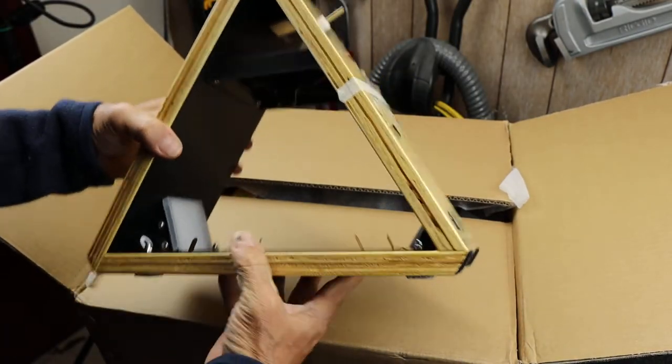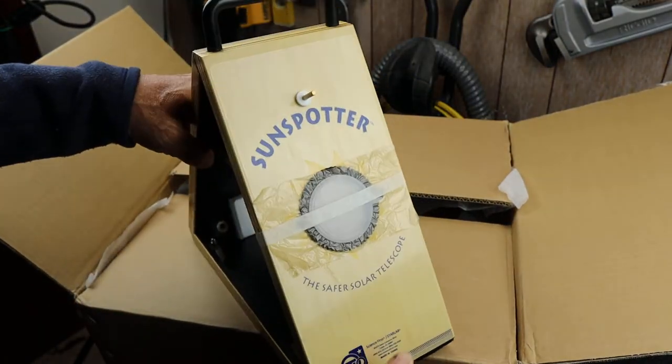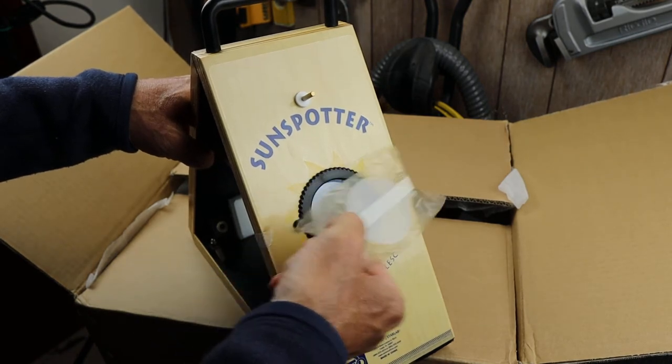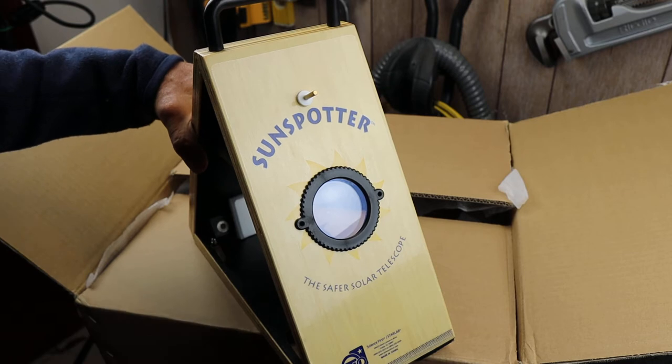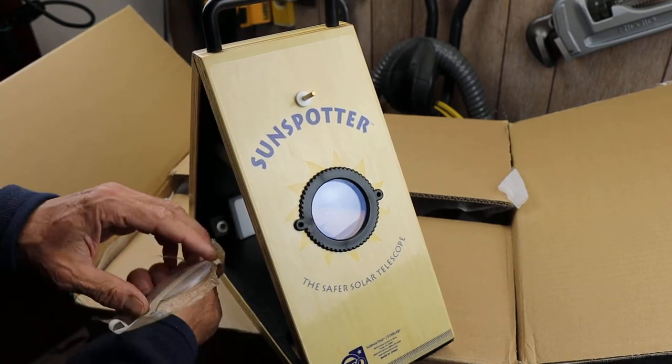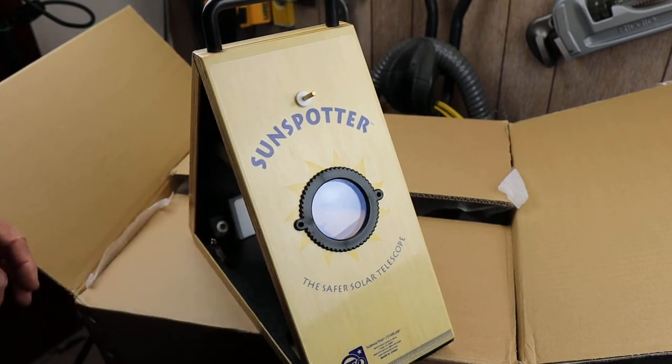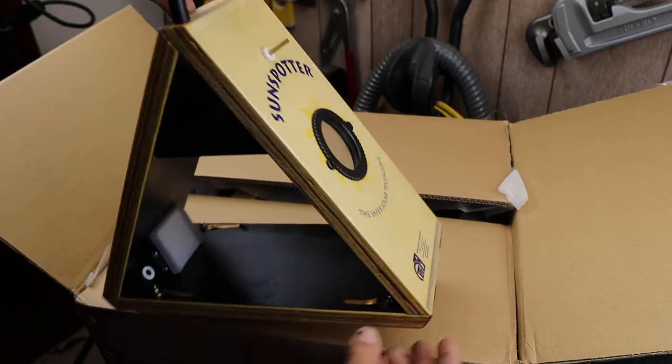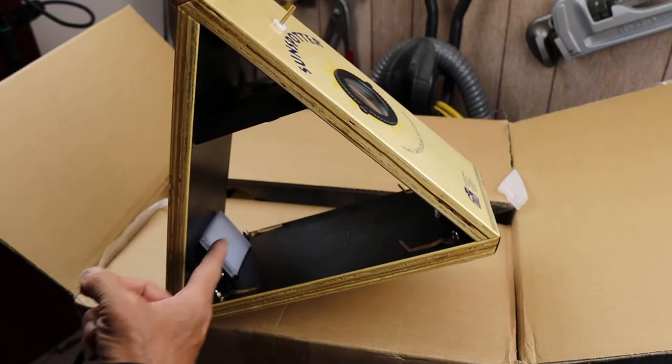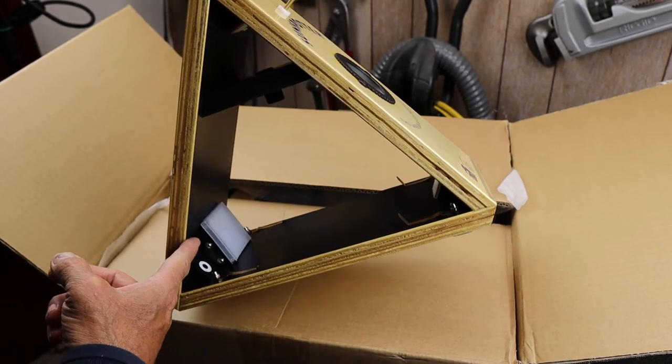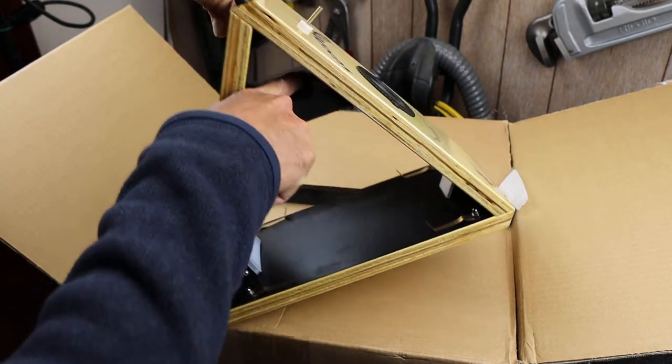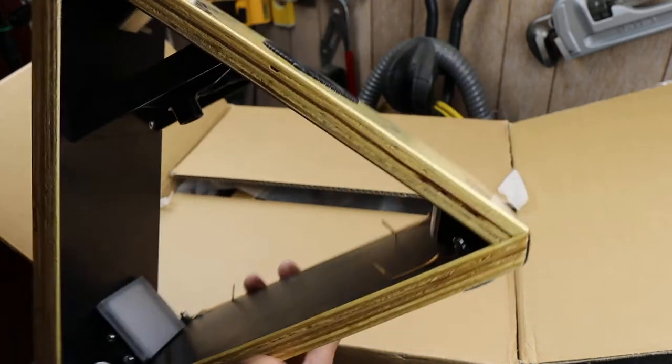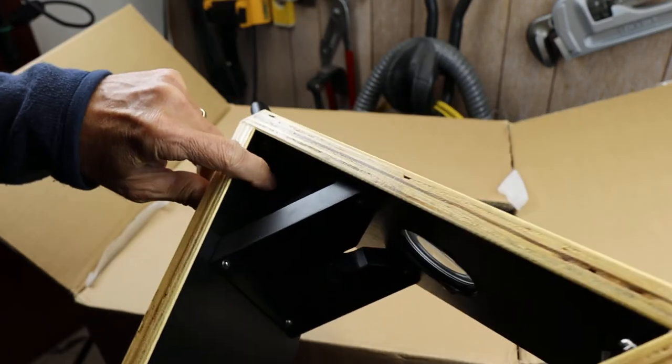Let me set that down and what it is is a triangle that has a lens right up here on the front end. This is what points towards the Sun along with the lens cap. And then the light goes through here hits this mirror right here and then hits this mirror and then goes up through a hole inside here to another mirror up at the top.